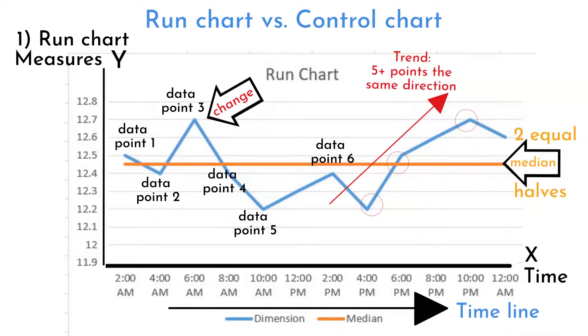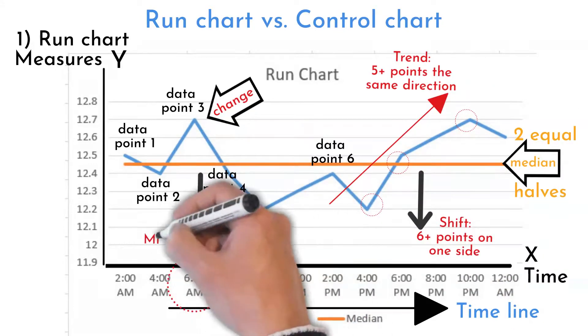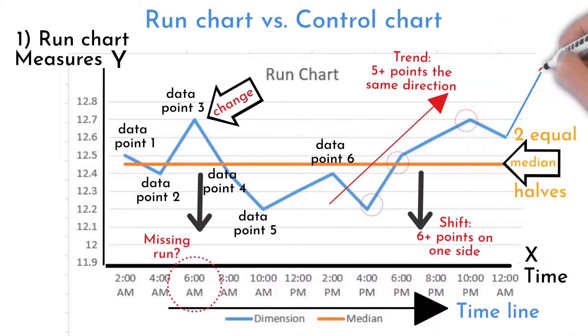Five or more points in a row with the same direction is a trend. A shift is six or more points on one side of the median. Expected more or fewer runs, and anomalous data points.